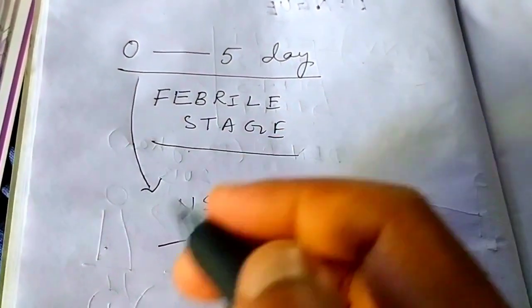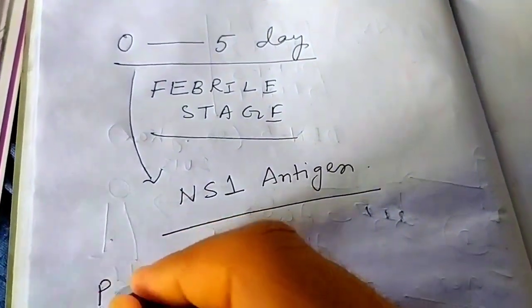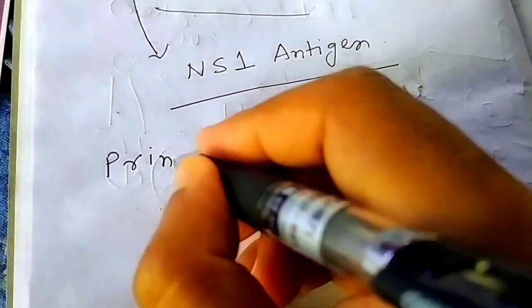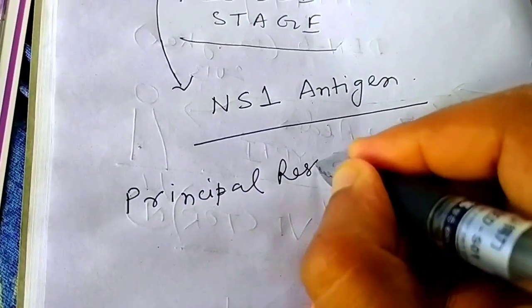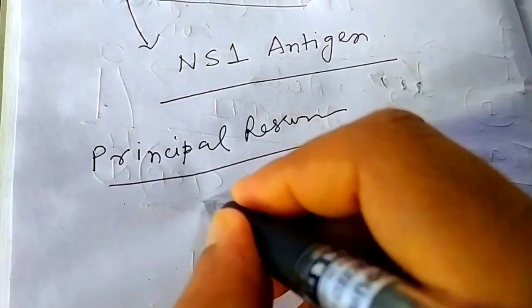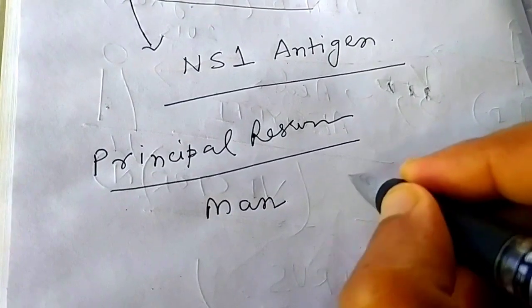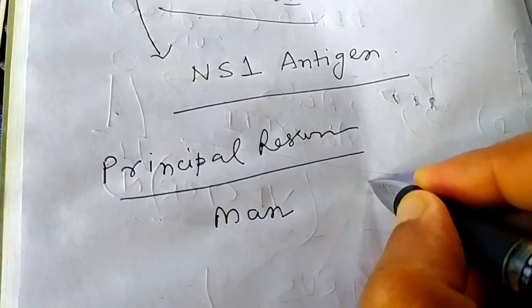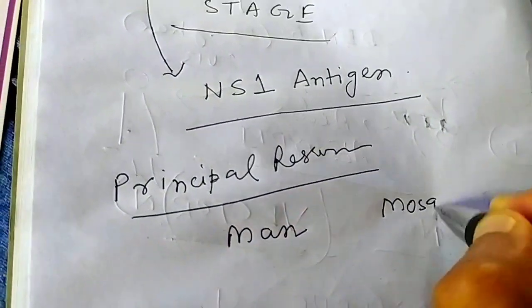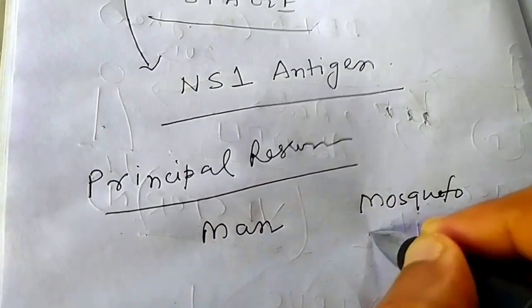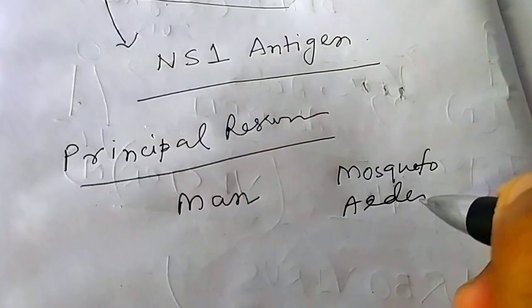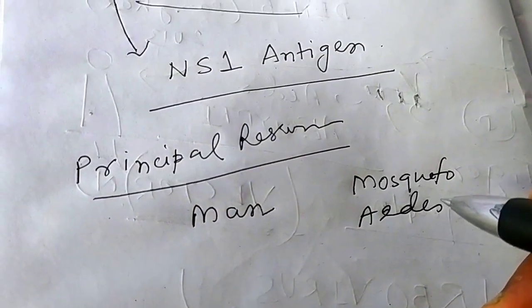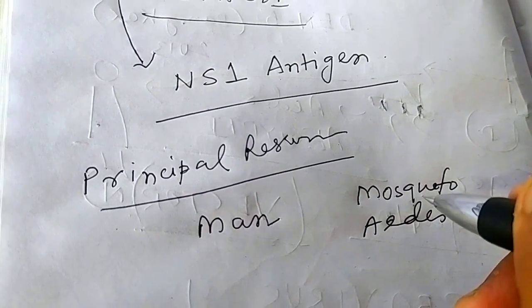The principal reservoir — who are the principal reservoir of this virus? The principal reservoir are man and mosquito. And which mosquito? It is Aedes. So these are the principal reservoir.